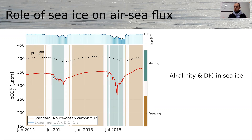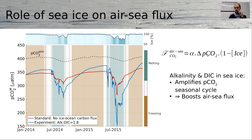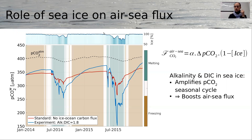Building on that, I can parameterize the storage of carbon in sea ice and look at its impact on the pCO₂ seasonal cycle. The obvious feature that strikes us is that the seasonal cycle is amplified — we have higher values in winter and lower values in summer. In terms of air-sea flux, it's a function of the difference between the atmospheric and the water pCO₂, but also of how much open water there is — one minus the ice concentration. In winter, when pCO₂ in the water is higher than in the standard run, the ice concentration is also at its highest, so there's no potential exchange between the ocean and the atmosphere.